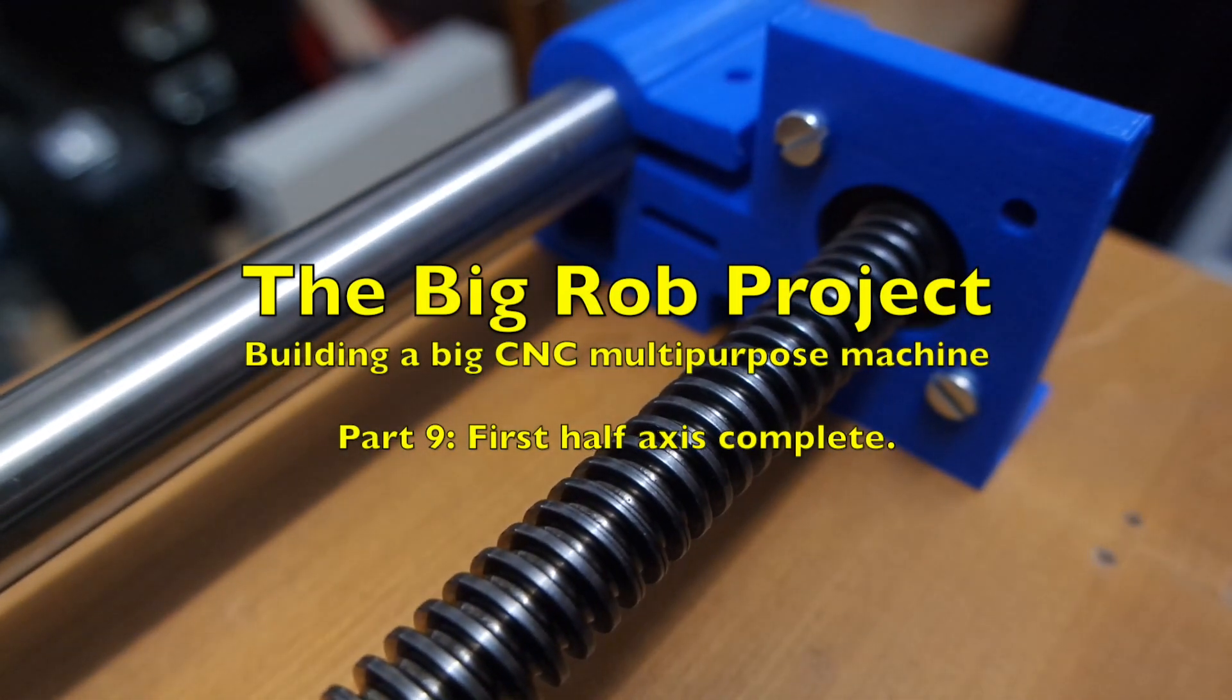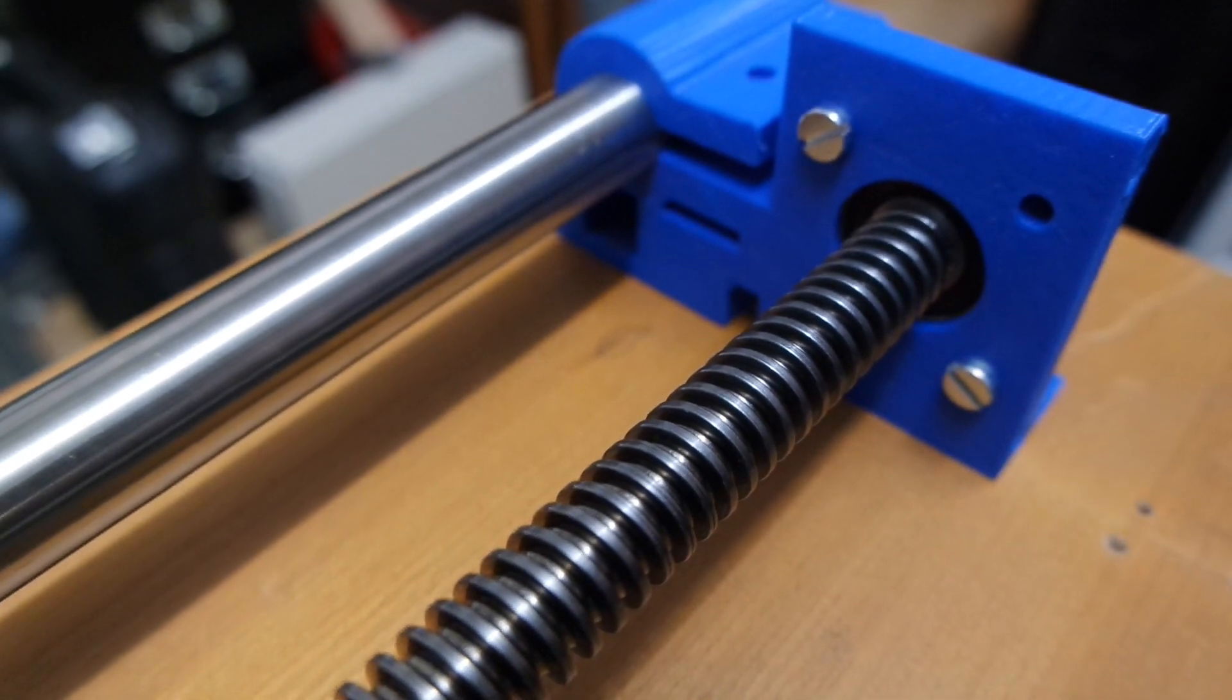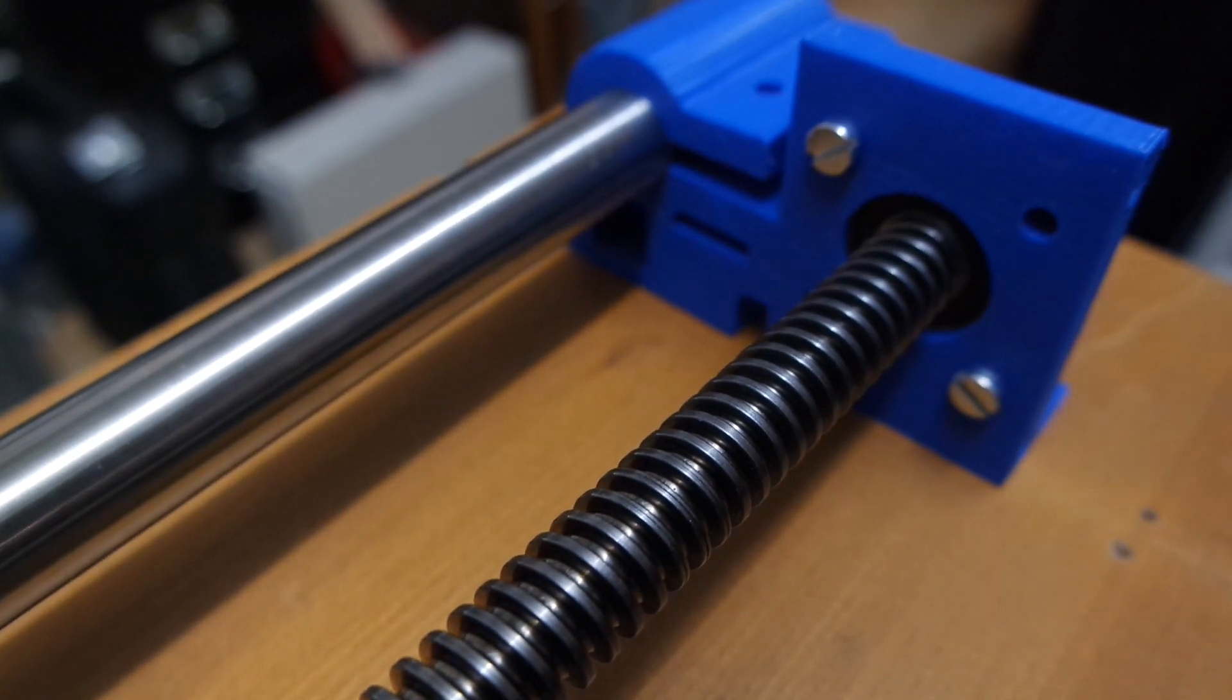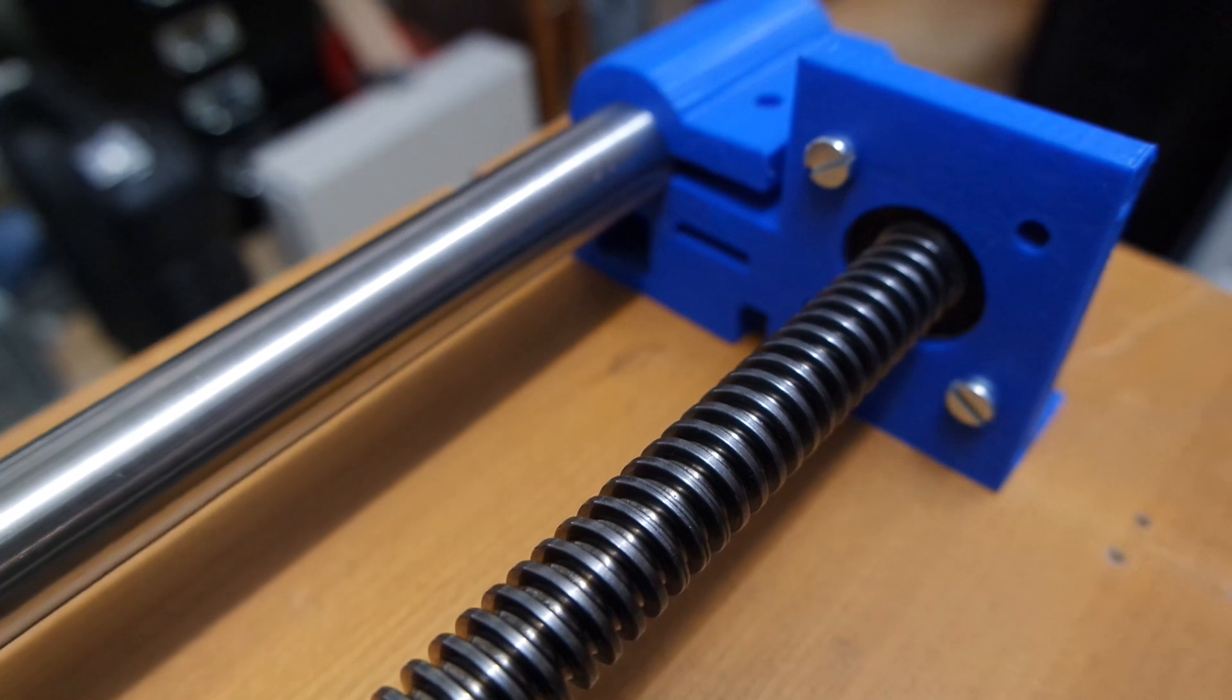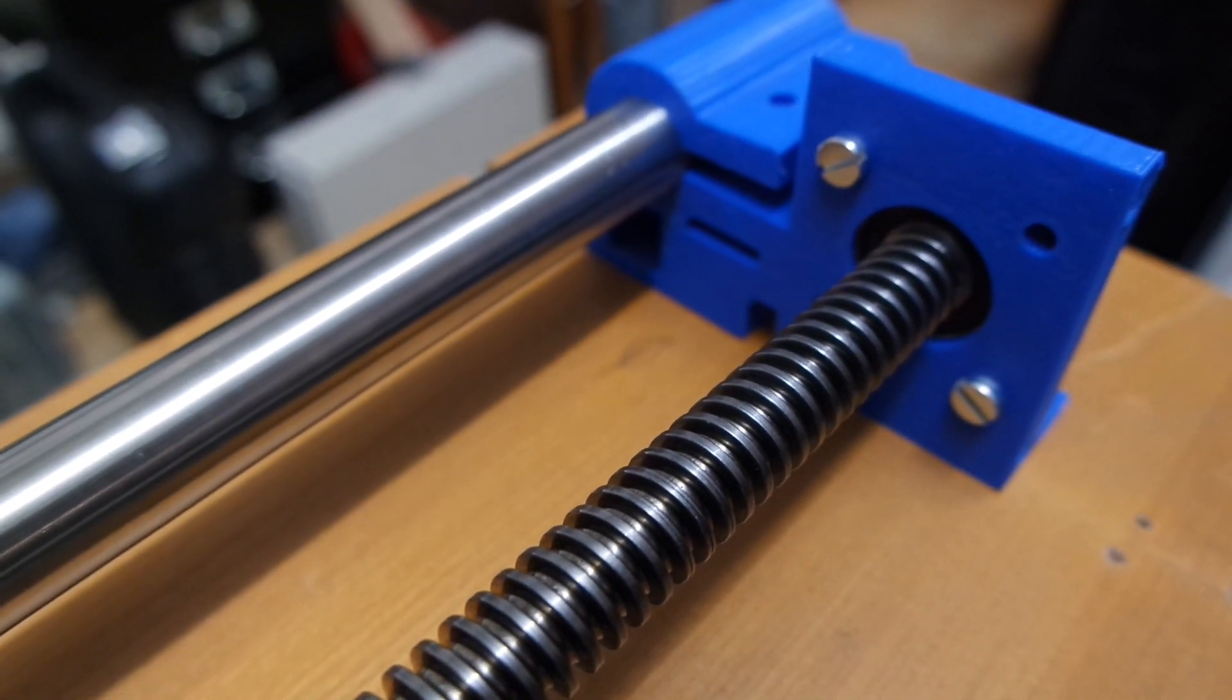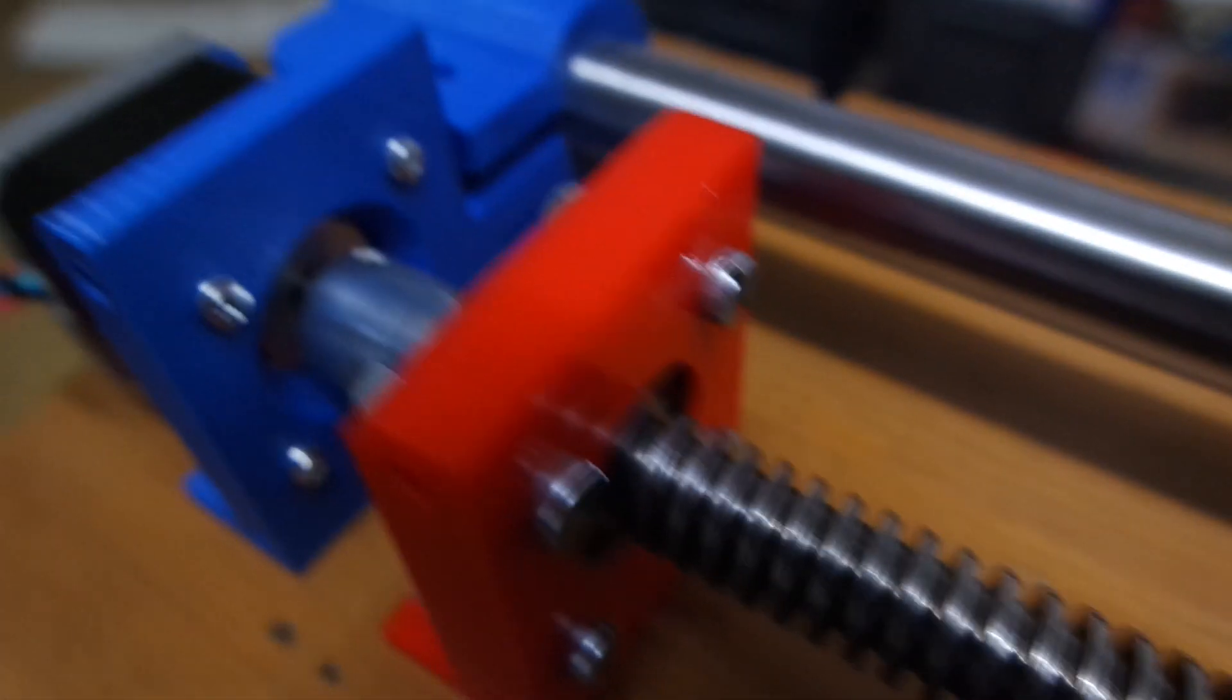Hello and welcome back. This is episode number nine of the big rod project. As you can see, I put together the gantry rod, the threaded rod, and the access pods, and everything looks pretty nice.